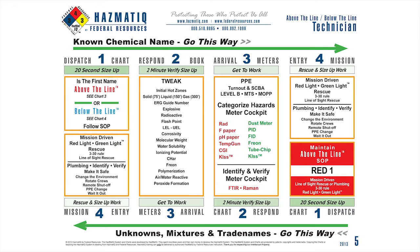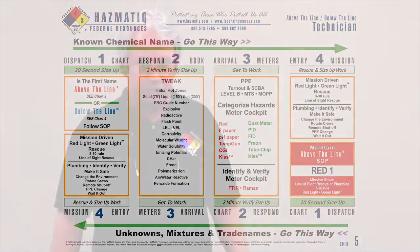Once we complete step one size-up, we're going to go to step two, which is the NIOSH. NIOSH verifies our initial size-up, and from that information gathered, we'll know PPE and we'll know meters to carry when we go down range to operate safely. So let's start with methylamine.